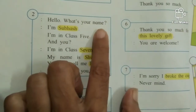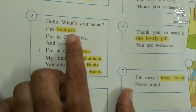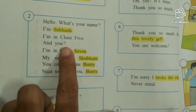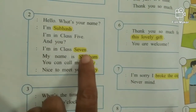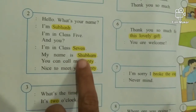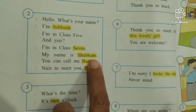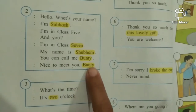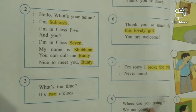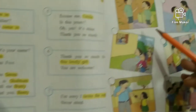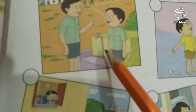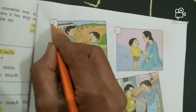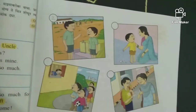Hello, what's your name? I am Subhash. I am in class 5. And you? I am in class 7. My name is Shibam. You can call me Bunty. Nice to meet you, Bunty. So, two friends are talking. Now, which picture suits to the dialogue? I think this one. So, I will write number 2.